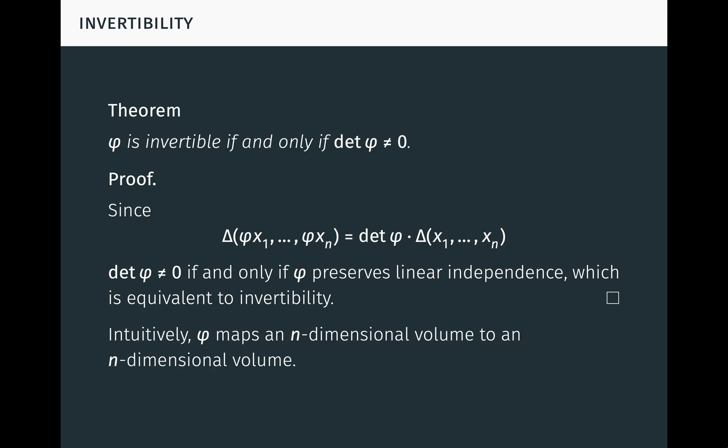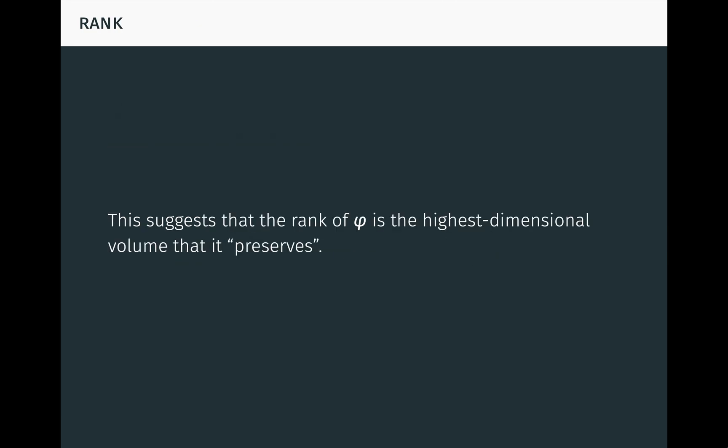Intuitively, this result tells us that a linear transformation of an n-dimensional space is invertible if and only if it maps an n-dimensional volume to another n-dimensional volume, and not to a volume of lower dimension. This intuition also suggests that the rank of a linear transformation is just the highest dimensional volume that it preserves, in the sense of mapping to another volume of the same dimension and not lower dimension.